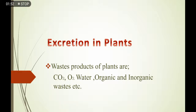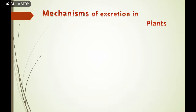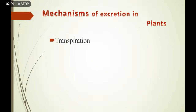زیادہ اہم category جو plants کے excretory products کی ہے وہ metabolic level پر پیدا ہونے والے بہت سارے organic اور inorganic nature کے waste products ہیں۔ اب ہم دیکھیں گے کہ کس طرح سے plants اپنی body سے waste material کو excrete کرتے ہیں۔ What types of mechanisms are used in plants for excretion?